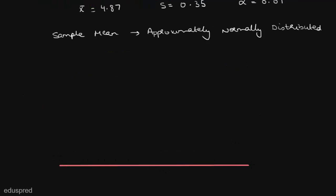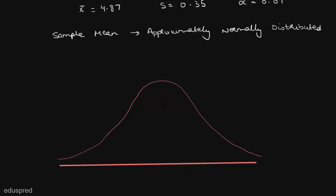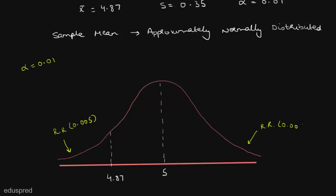This is how the distribution may look like. We know that the hypothesized value of the population mean is 5, so we write 5 at the center. The x-bar calculated is 4.87, so it will be somewhere to the left of 5. Since this is the case of a two-tailed test and alpha is 0.01, the rejection region will be on both sides. So we have one rejection region on the left and one on the right, dividing the 0.01 into two equal parts.